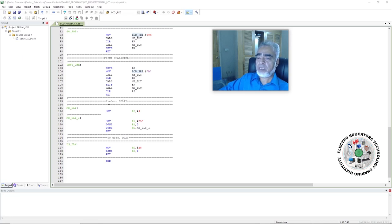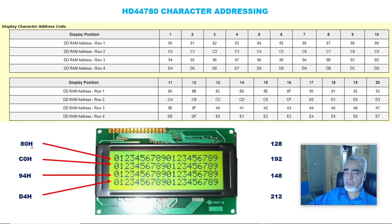Here we have written two delays — a 2 millisecond delay and a 50 microsecond delay — as used in our initialization routine. Now we will modify our program to print the character 'A' on the second row and first column. Here we can find the address of first row and first column is 80H, C0H for the second row and first column, 94H for the third row and first column, and D4H for the fourth row and first column. As we are using a 20x4 LCD, we can print 80 characters. For example, to print on the third column and first row, we use address 82H.